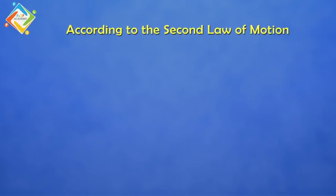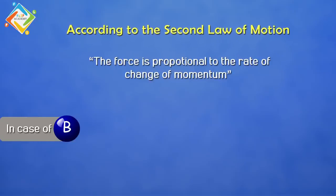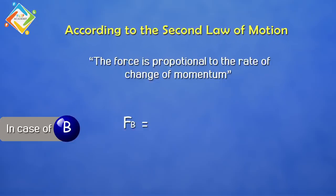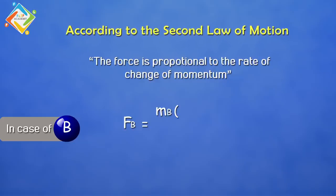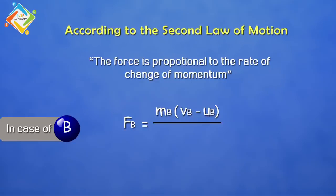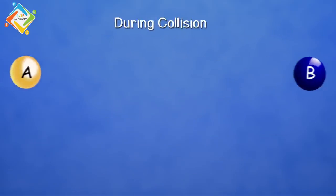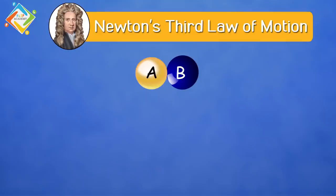According to the same second law of motion — force is proportional to the rate of change of momentum — the force exerted on ball B is represented by fB, which becomes equal to the change in momentum. As we have already calculated, the change in momentum is mB(vB − uB) divided by time t, because we are considering the rate of change of momentum.